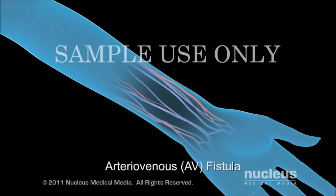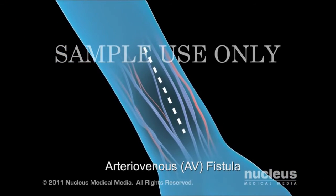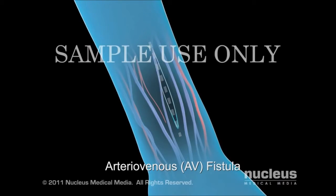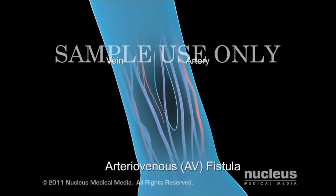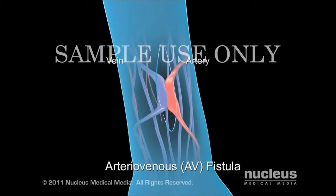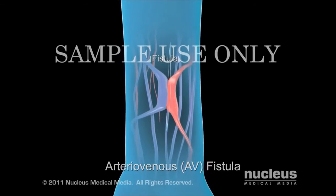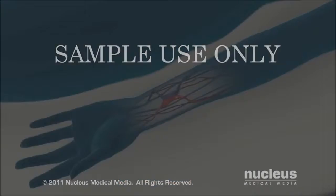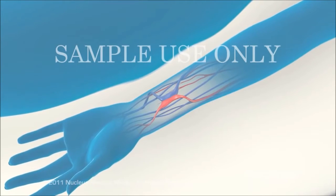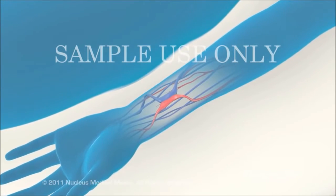To create an arteriovenous fistula, your surgeon will make a small incision in your skin and connect an artery with a vein to make a larger vessel called a fistula. Once your vascular access site has healed, your doctor can start hemodialysis.